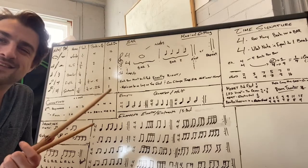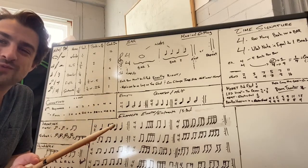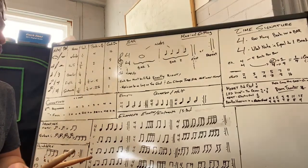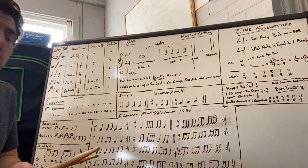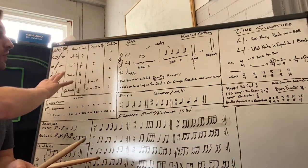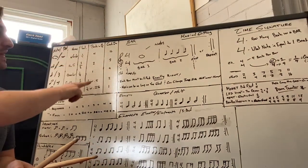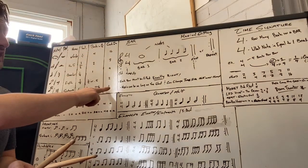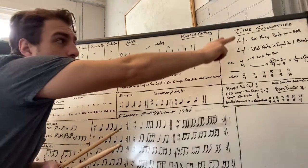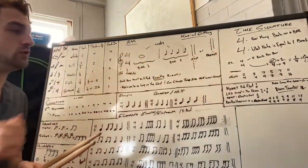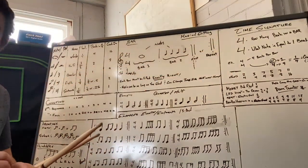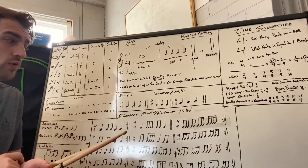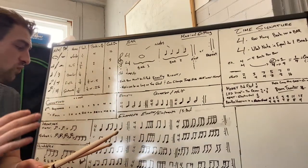Hey guys, Alex here from Two Minute Drums — welcome back. Continuing with our theory: we have covered all the notes, how many beats they equal, how many counts they each get, how to fit them in a bar, and what the time signature means. Last lesson we covered half notes and quarter notes, and this lesson we will be moving on to quarter notes and eighth notes.